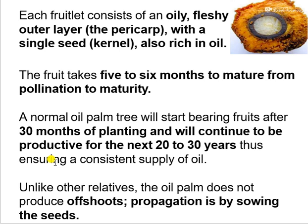The fruit takes 5 to 6 months to mature from pollination. The normal oil palm tree will start bearing after 30 months of planting and will continue to be productive for the next 20 to 30 years, ensuring a consistent supply of oil. Unlike other relatives, the oil palm does not produce offshoots. Propagation is by sowing seeds.